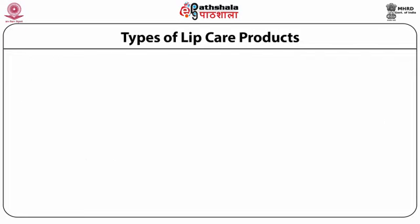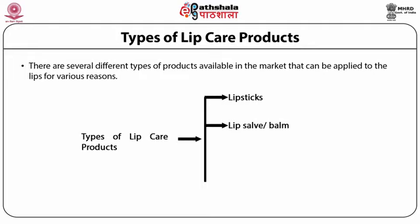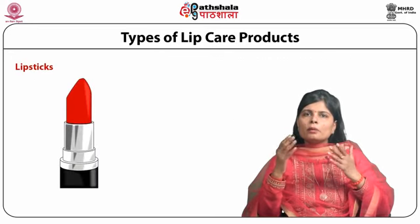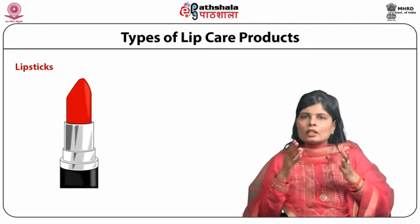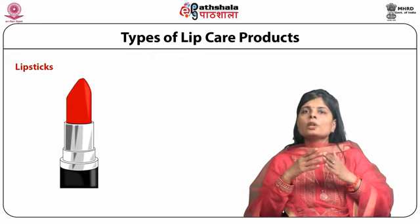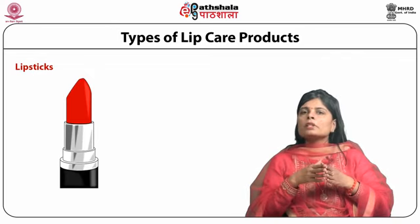There are several different types of lip care products available in the market that can be applied on the lips for various reasons. These include lipsticks, lip salve or balm, lip gloss and lip liners. Lipsticks are designed to enhance the appearance of the lips by imparting colour and gloss. They consist of waxes, butters, fats, oils and hydrocarbons, usually referred to as the base, as well as pigments for colour.